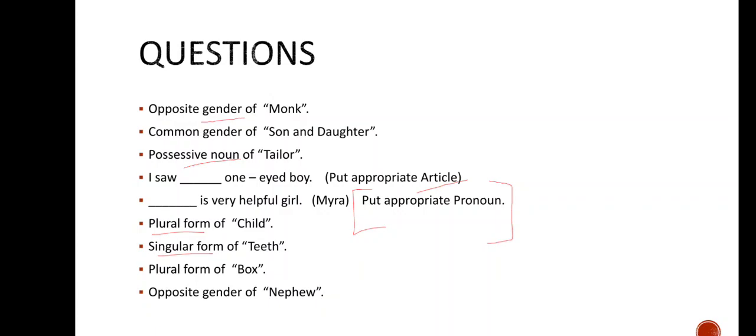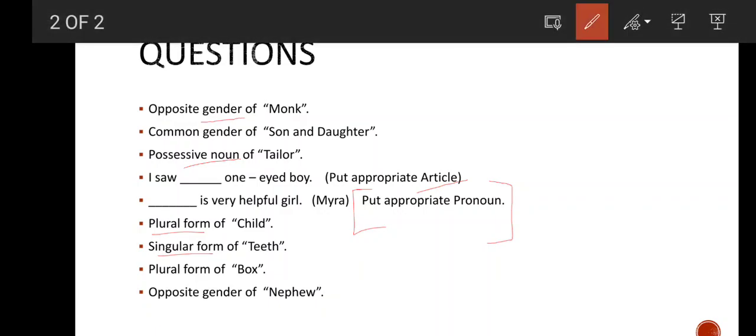So here see, opposite gender of monk will be nun. This will be the option, you have to click on the option. Common gender of son and daughter will be children. Possessive noun of Taylor will be Taylor's.